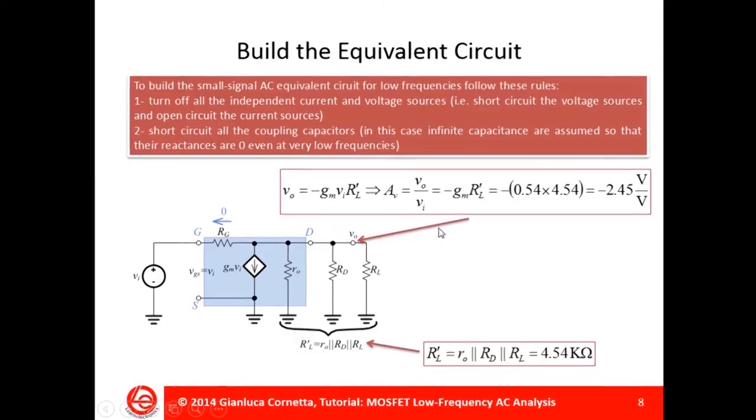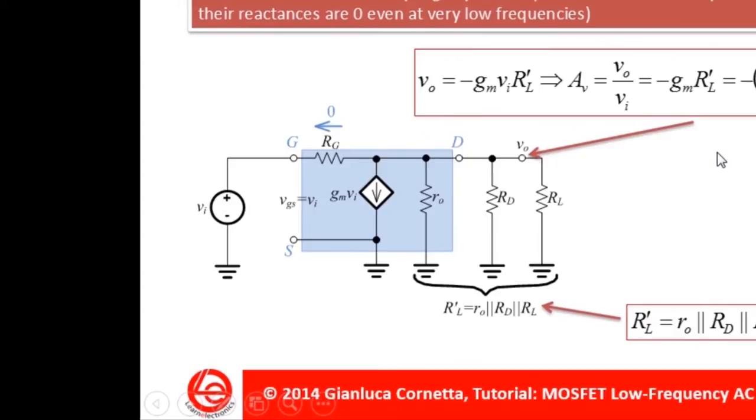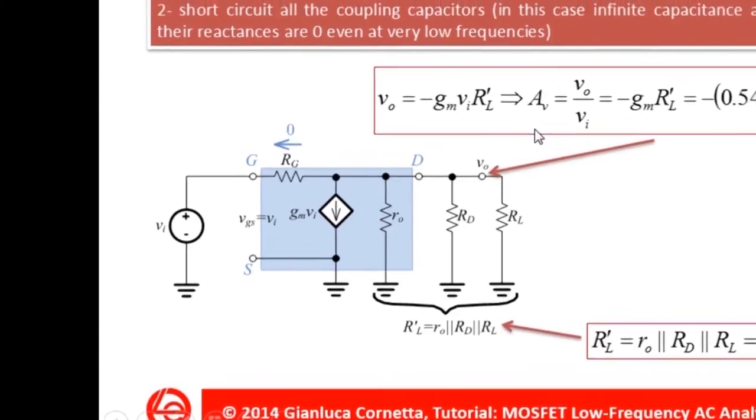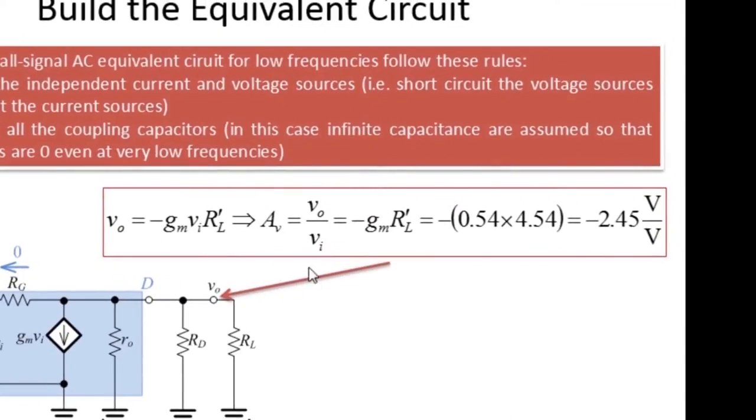I have completely described the MOS transistor and I can replace the transistor DC model into my circuit. To compute the output voltage, I need to consider the output mesh and apply the Ohm's law to the output mesh. Consequently the voltage gain AV, that is defined as VO divided by VI, is equal to minus 2.45.